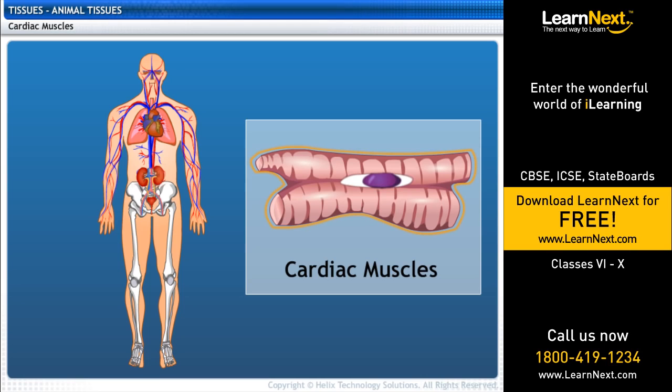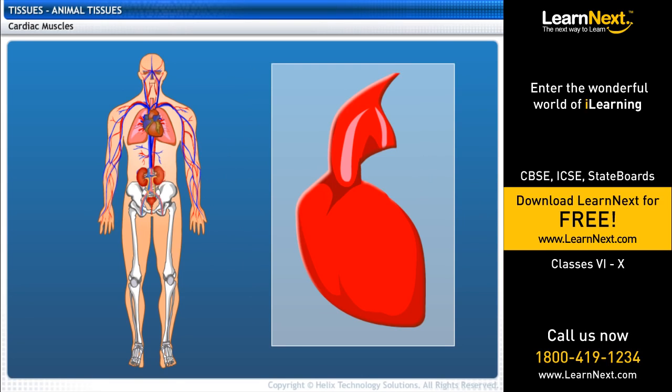Cardiac muscles are branched cylindrical fibers with a single nucleus. The contraction and relaxation of these involuntary muscles cause heartbeats.